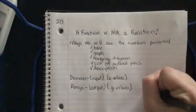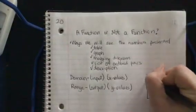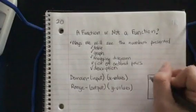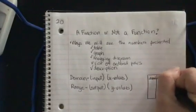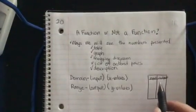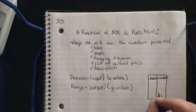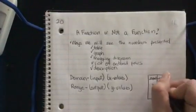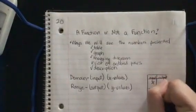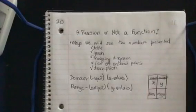So if we have a table, what do we usually have listed on the left of our table, input or output? Input. What do we usually have listed on the left, x or y? So normally, this is going to be our domain, and this is going to be our range.